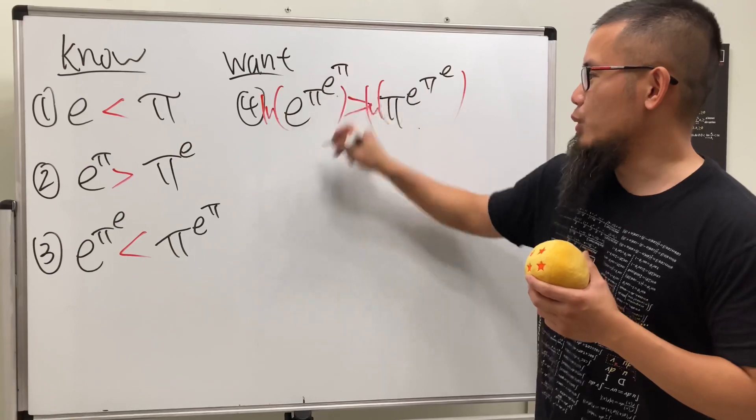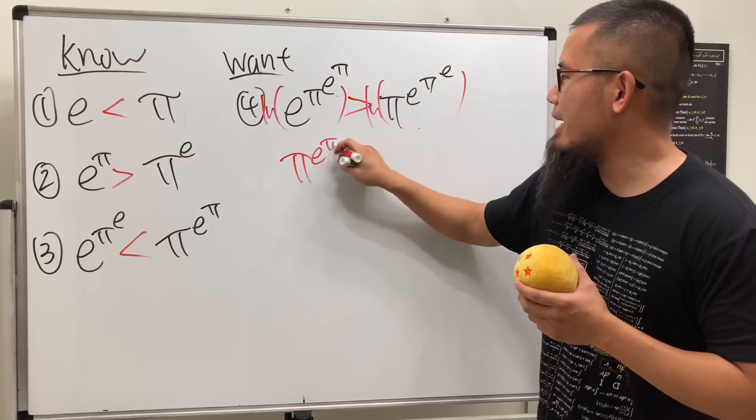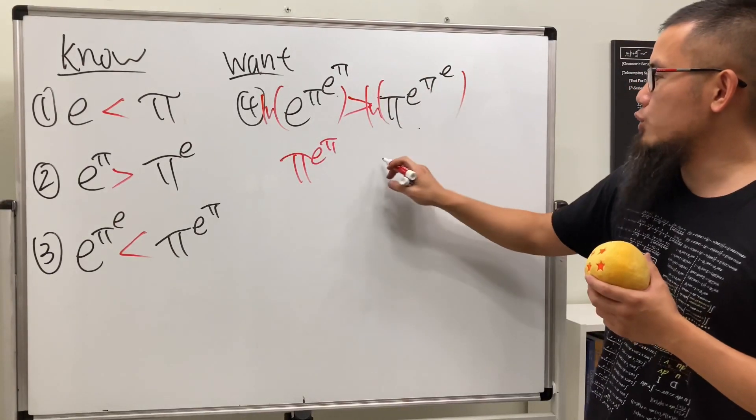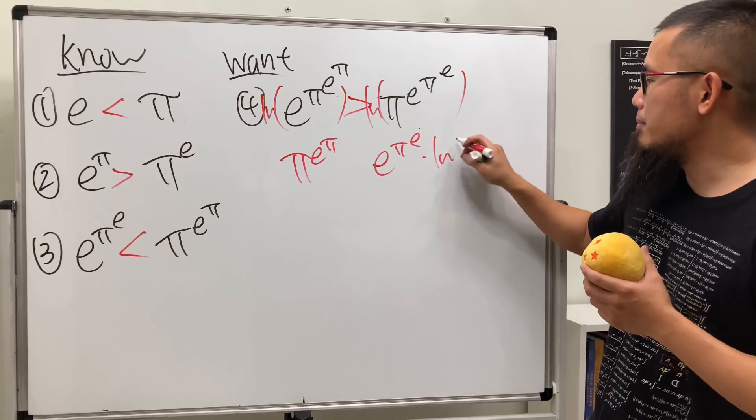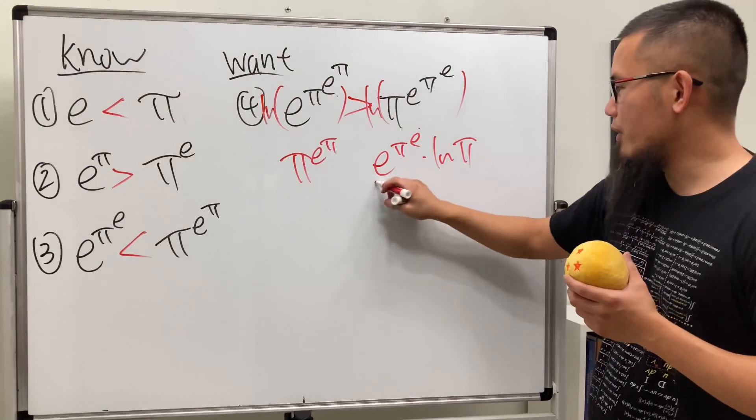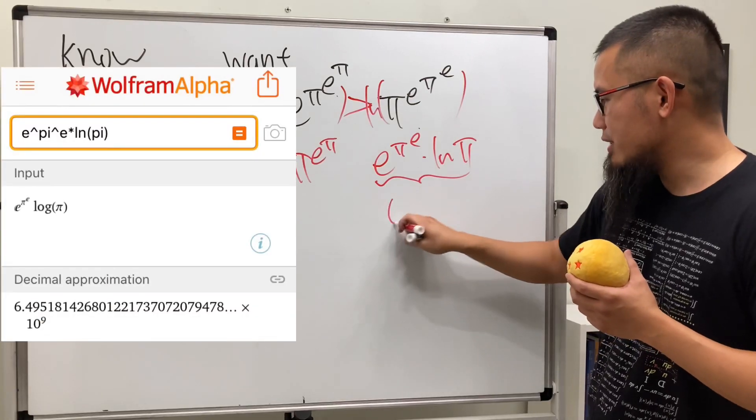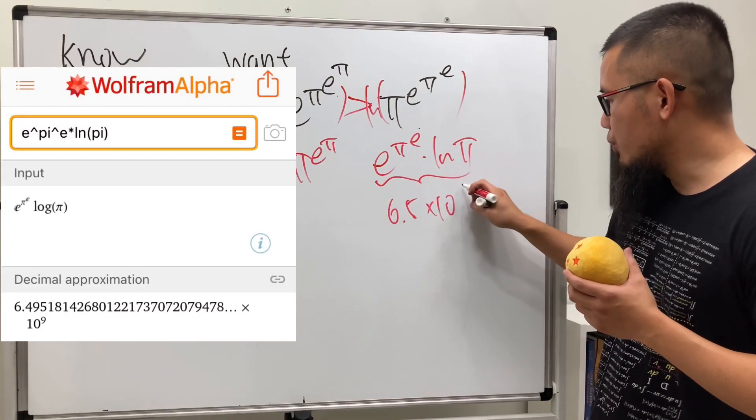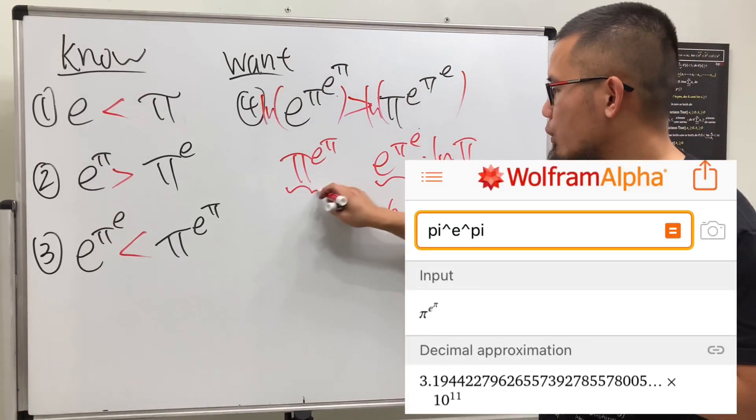Okay, so if you do that, on the left-hand side this and that will cancel, we just have π to the e to the π. And on the right-hand side we can bring that to the front, so we will have e to the π to the e times ln π. And then now enter this on the Wolfram Alpha. This right here is going to give you 6.5 times 10 to the 9th power, and this right here will give you 3.2 times 10 to the 11th power.